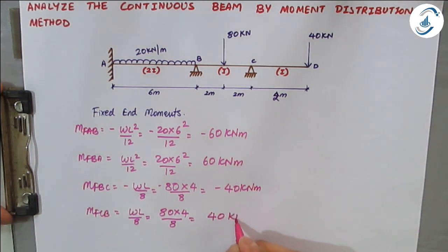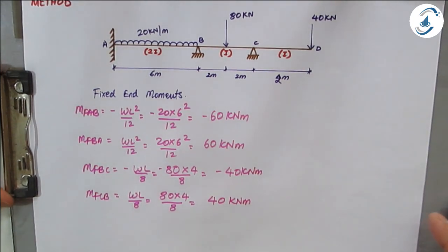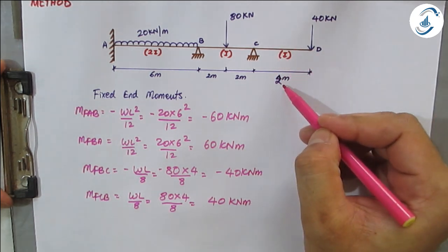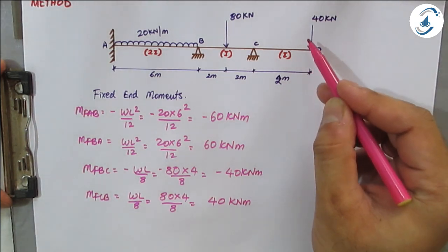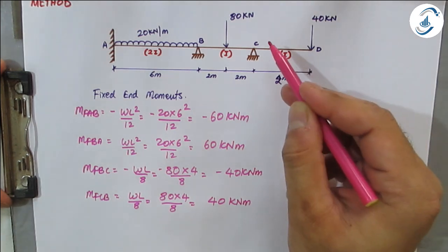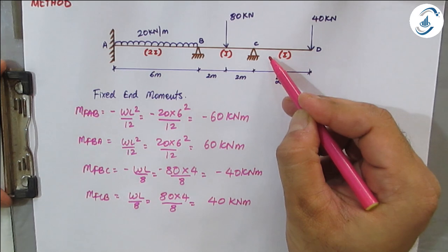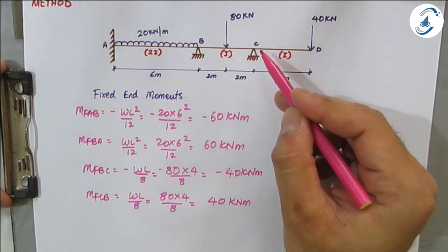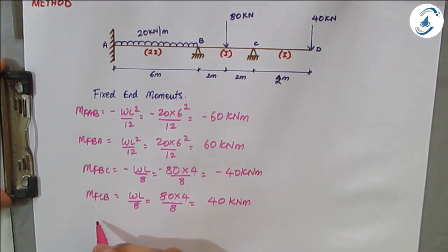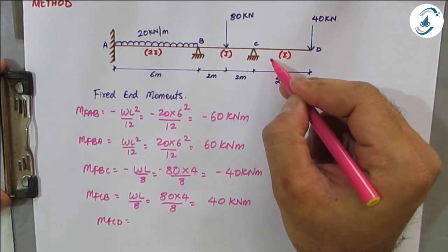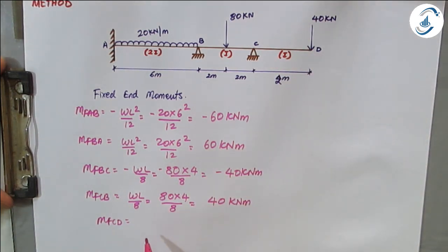The speciality of an overhang beam is that it gives a direct moment. The 40 kilo-newton load acts clockwise at a span of 2 meters, so 40 × 2 = 80 kilo-newton meter is the moment generated by span CD. To counteract this clockwise moment, there is an anti-clockwise moment, so MF_CD = −80 kilo-newton meter.